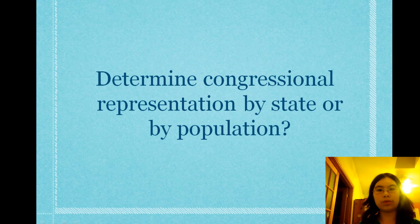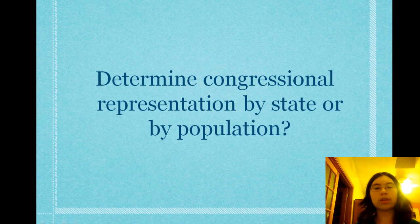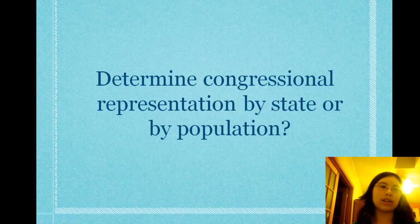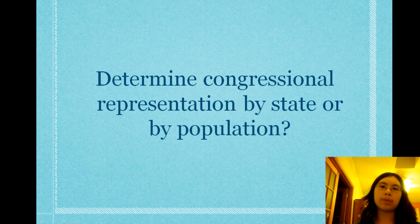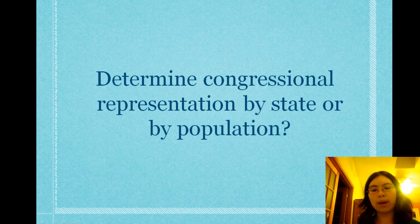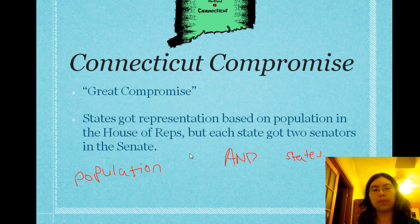So, what were they to do — determine congressional representation by state or by population? If by state, California and Idaho get the same power despite huge population differences. If by population, smaller states like Montana suddenly don't have as much of a voice. Either way it seemed like someone was going to get the short end of the stick — until they came up with the Connecticut Compromise, also called the Great Compromise.